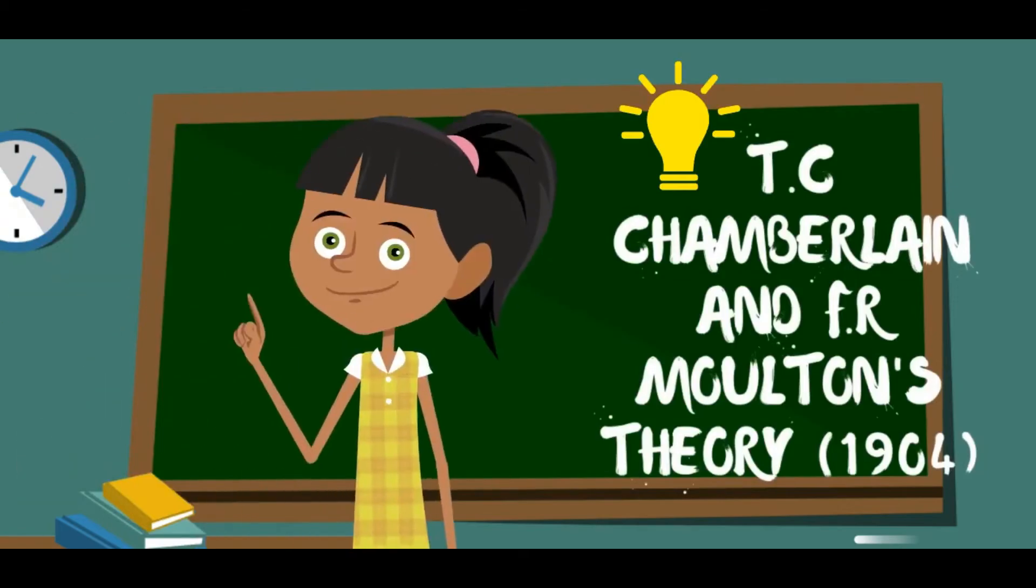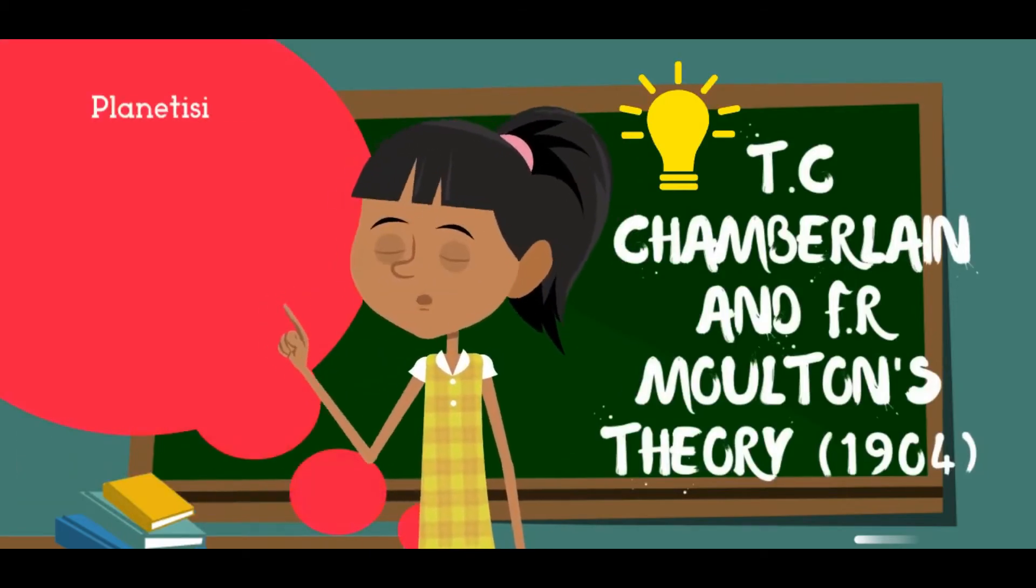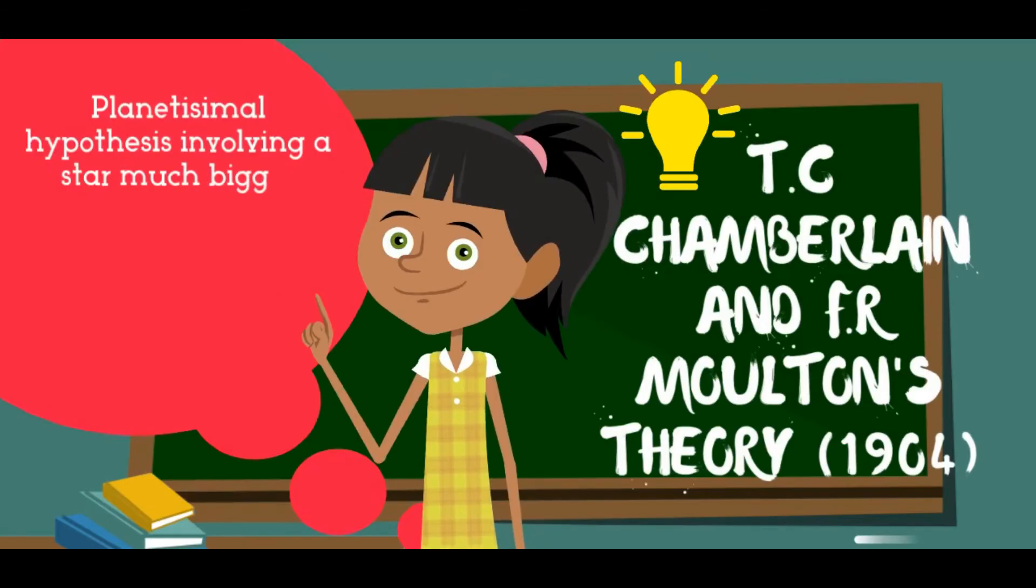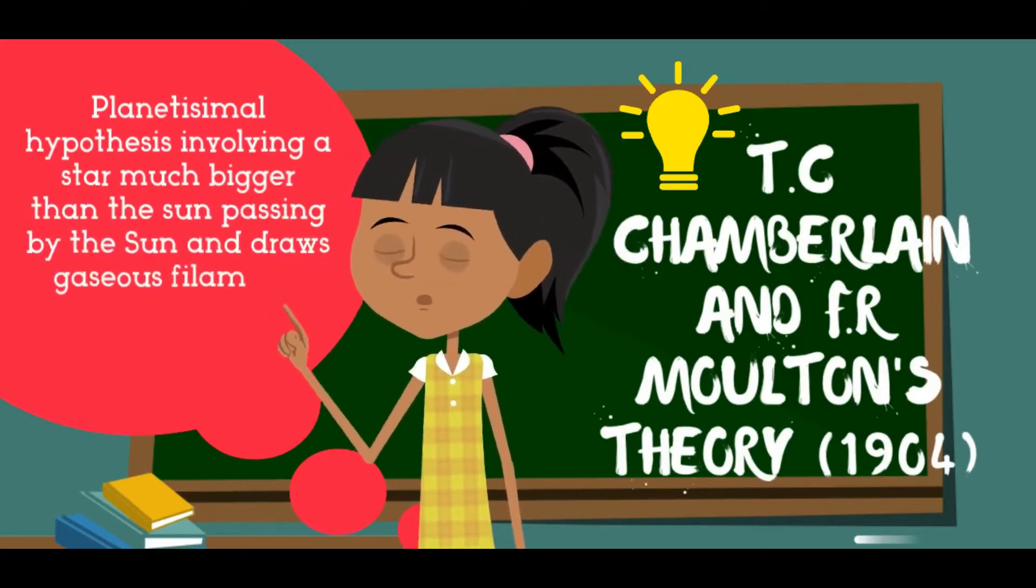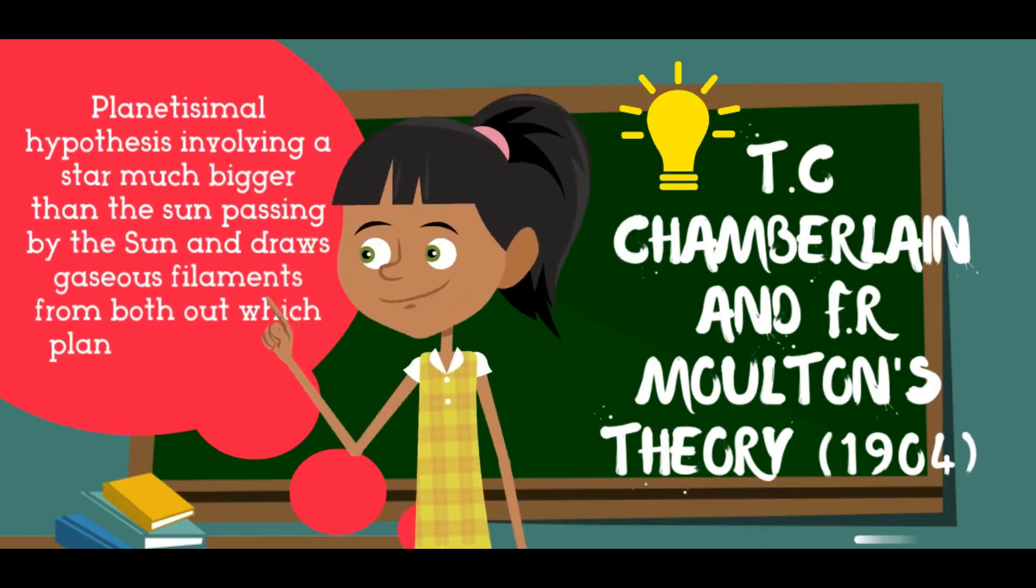According to James Jeans in 1904, planetesimal hypothesis involving a sun much bigger than the present sun and gaseous filaments from which planetesimals were formed.